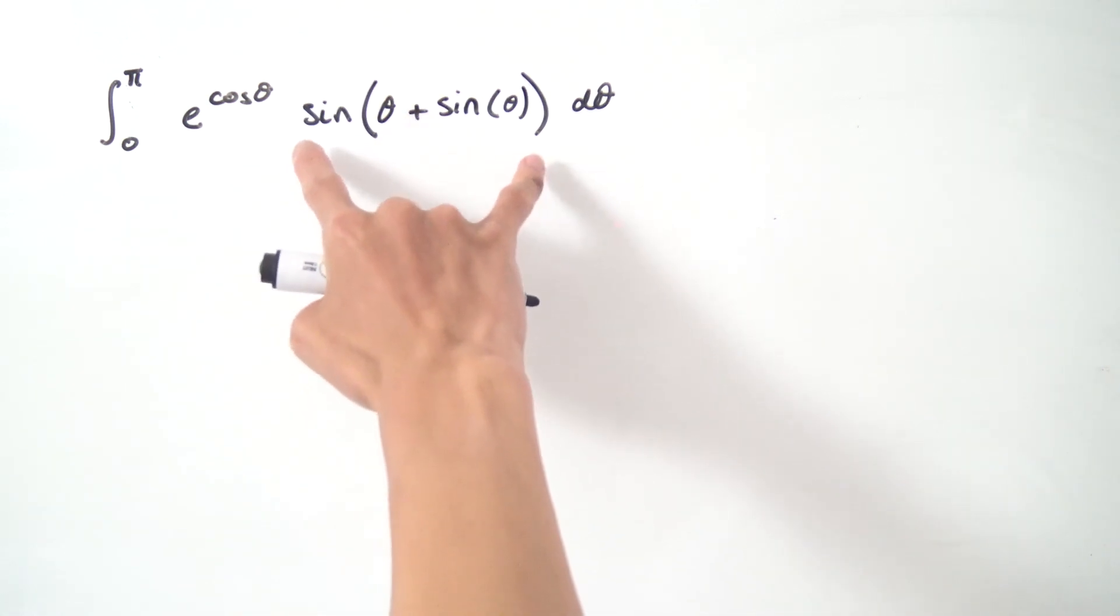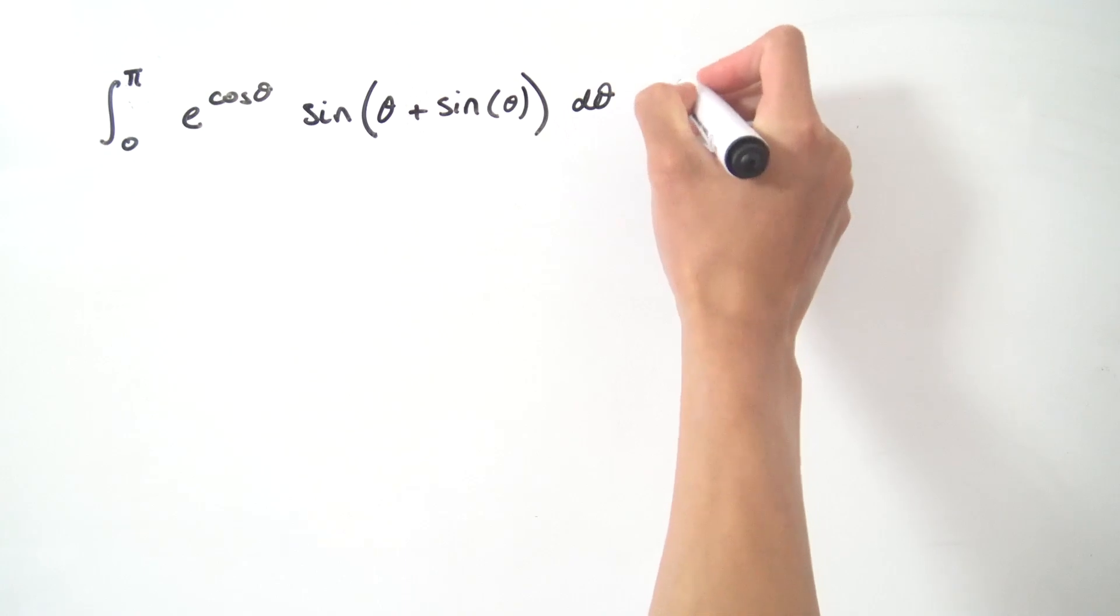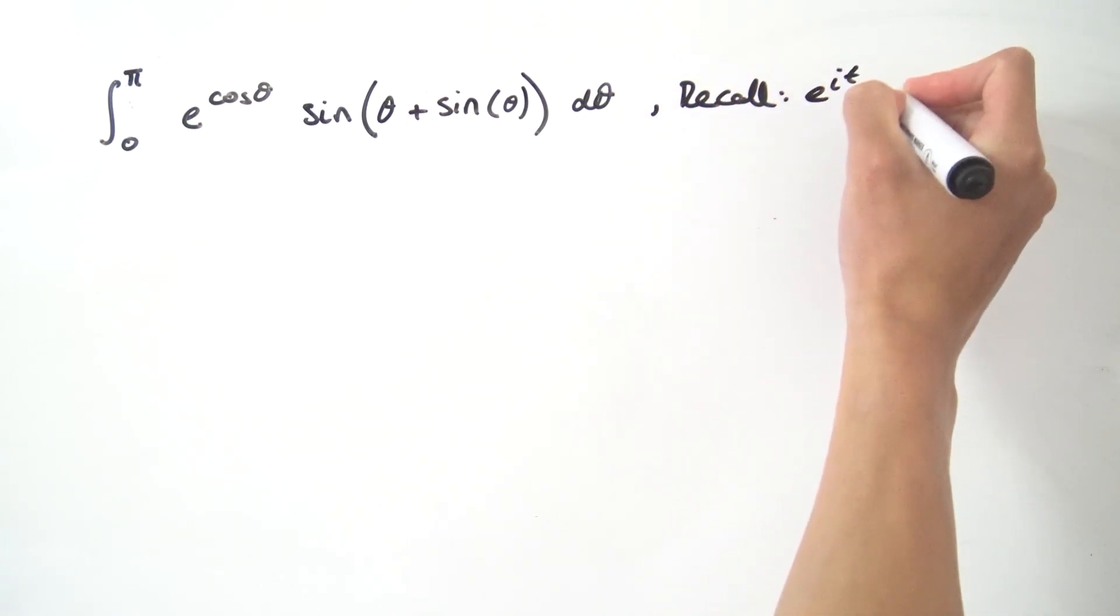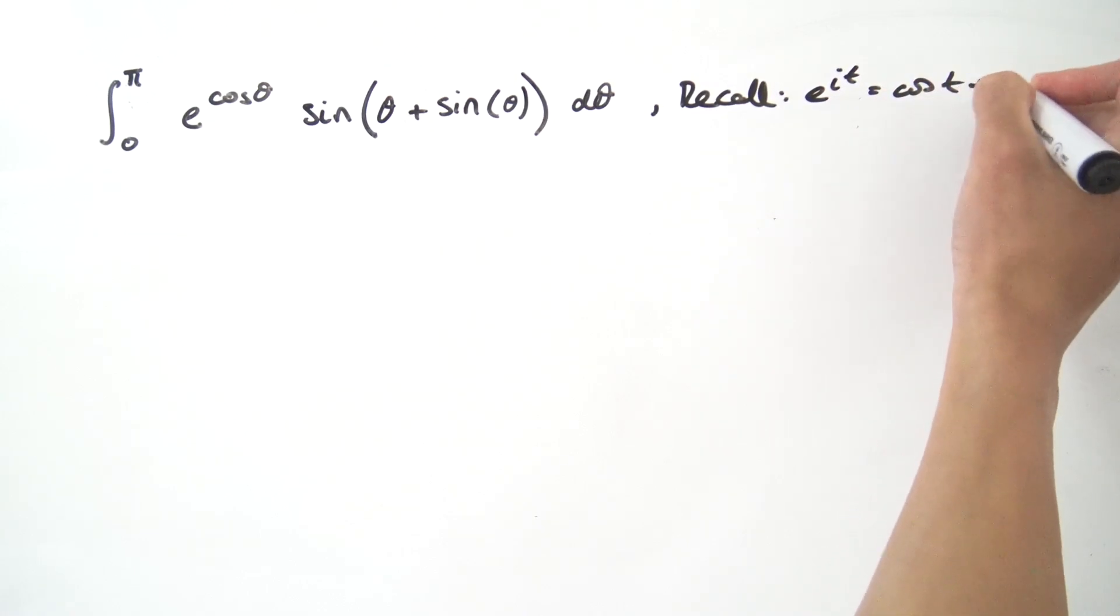The first thing I'm going to do is replace the sine function with the complex exponential. So recall Euler's formula: if we have e to the i times t, then that's just the cosine of t plus i times the sine of t.